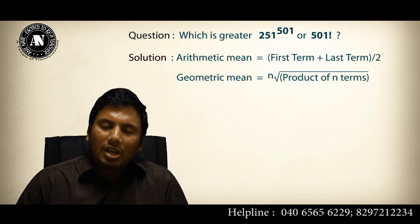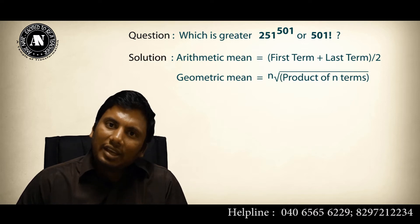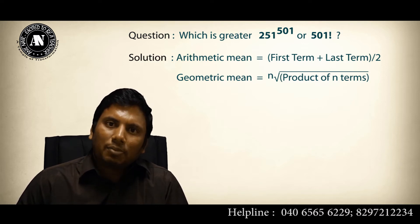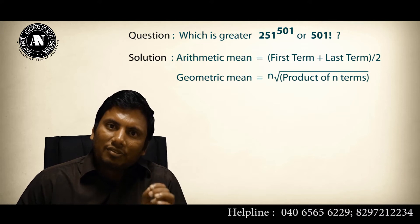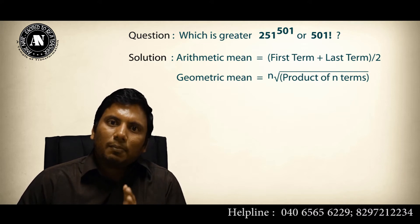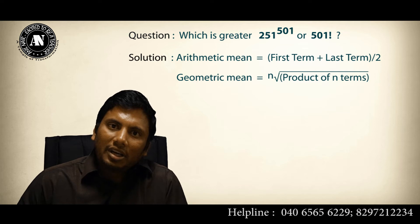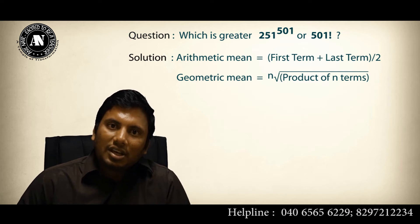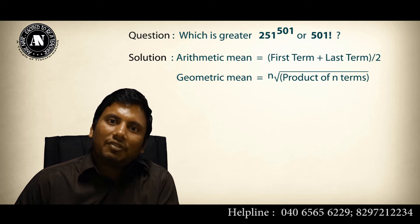Step number 1. The arithmetic mean of any terms in arithmetic progression is given by (first term + last term) divided by 2. The geometric mean of any terms is given by the nth root of the product of all the terms.